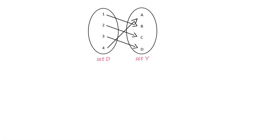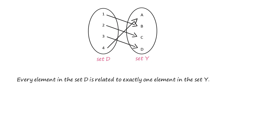Consider the sets D and Y related to each other as shown. Can we consider this relation as a function? Pause this video and give it a thought. Clearly, every element in the set D is related to exactly one element in the set Y, so the given relation is a function. Also note that in this case, the range is equal to the codomain.